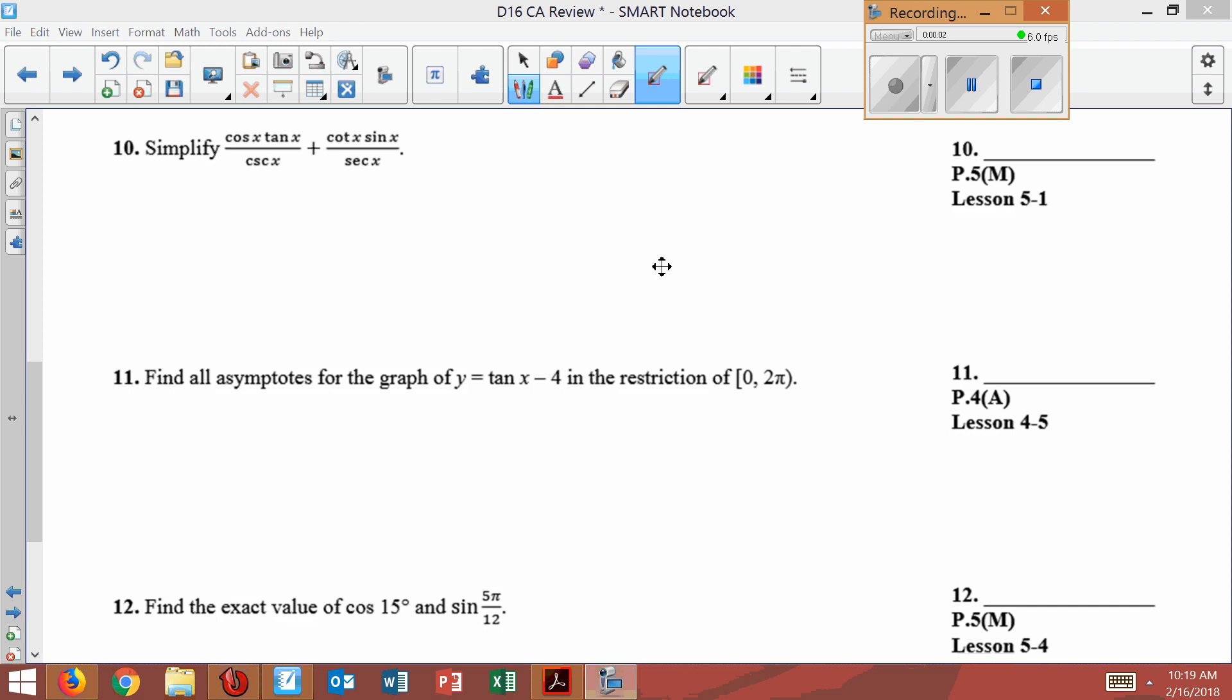Number 10. Simplify cosine x times tangent x all divided by cosecant x plus cotangent x sine x over secant x.